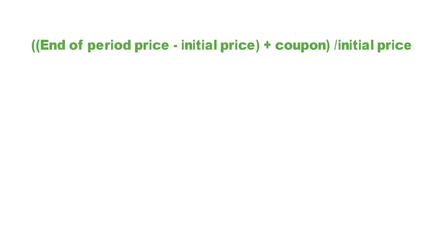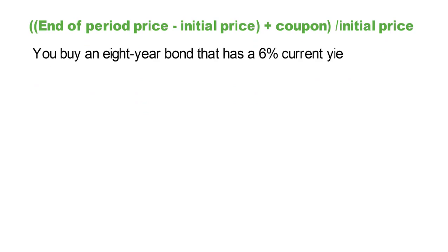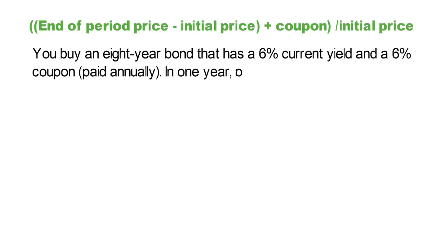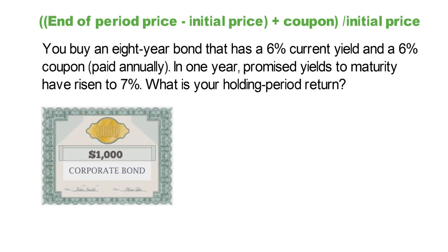Here is an example. You buy an 8-year bond that has a 6% current yield and a 6% coupon paid annually. In one year, promised yields to maturity have risen to 7%. The current yield and the annual coupon rate of 6% imply that the bond price was at par a year ago — in other words, you bought the bond at $1,000.